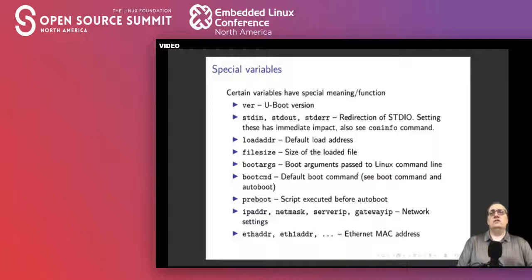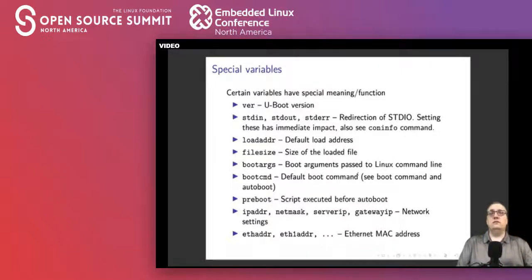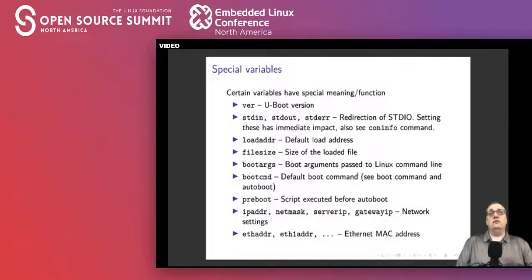Network settings include ipaddr (local IP address), netmask, serverip (typically the DHCP or TFTP server), gatewayip, and Ethernet MAC addresses, which can also be stored in the environment table. The bootcmd variable is the default boot command — when you type boot, it calls run bootcmd, which also runs automatically if you don't press the space bar to get to the command line.